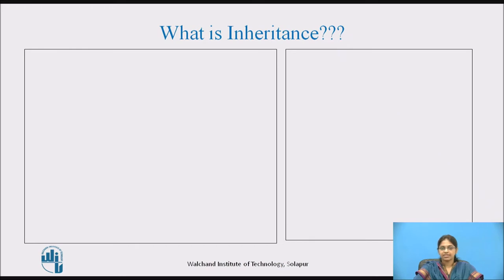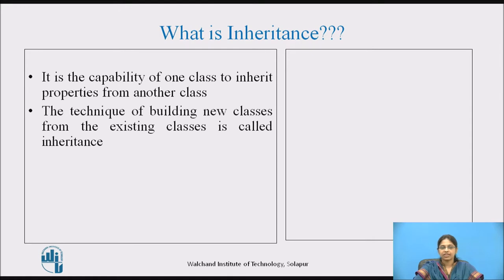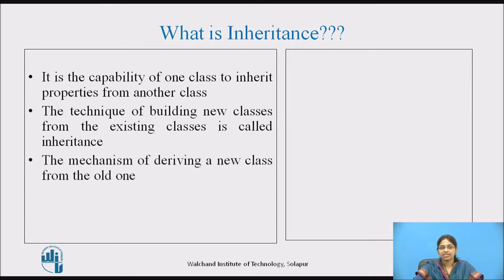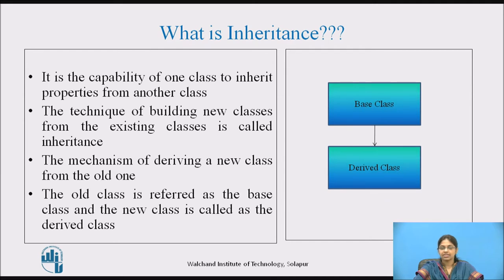Let us see what is inheritance. Here a set of definitions are given. Inheritance is the capability of one class to inherit the properties from another class. The technique of building new classes from existing classes is called inheritance. The old class is referred to as the base class and the new class is called the derived class, where properties from the base class are inherited into the derived class.